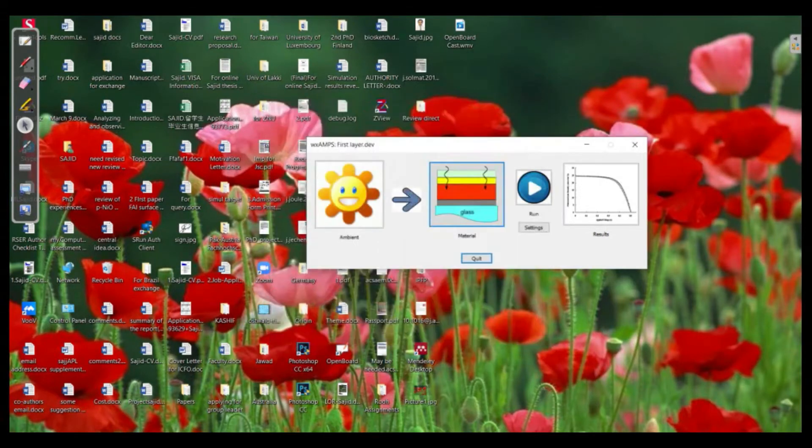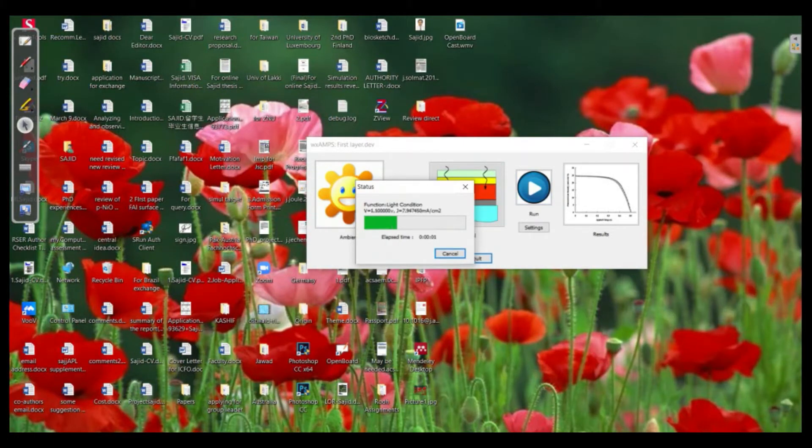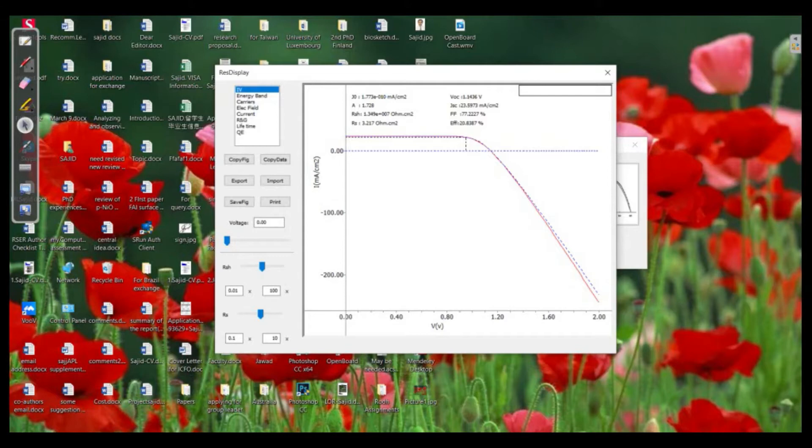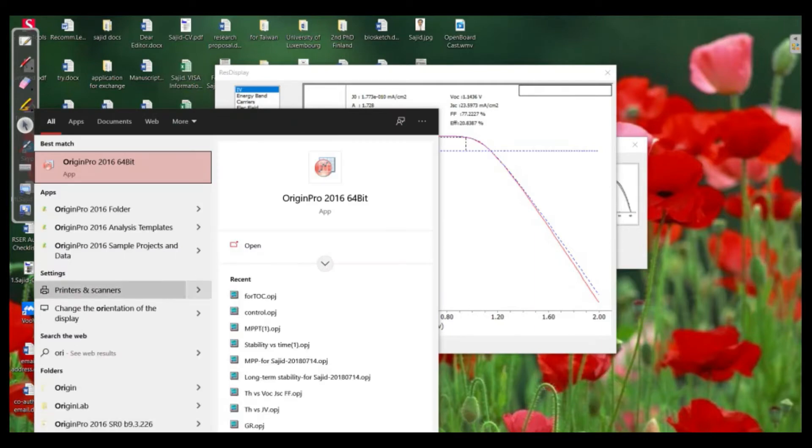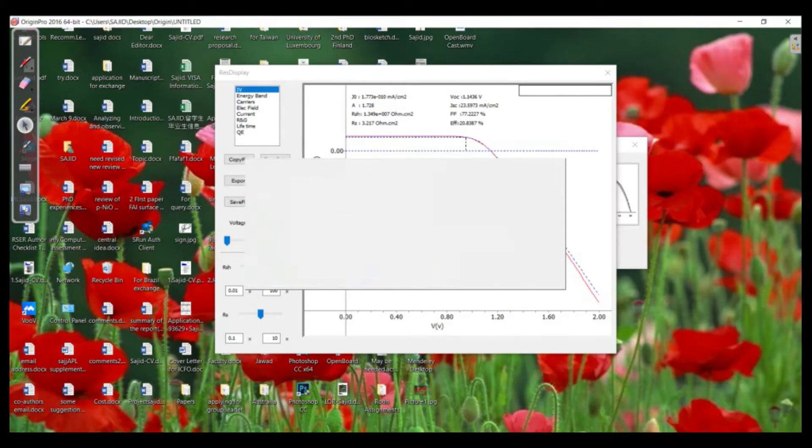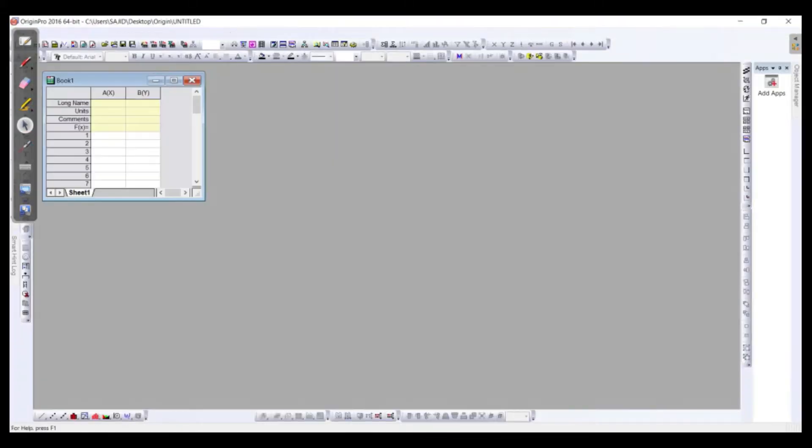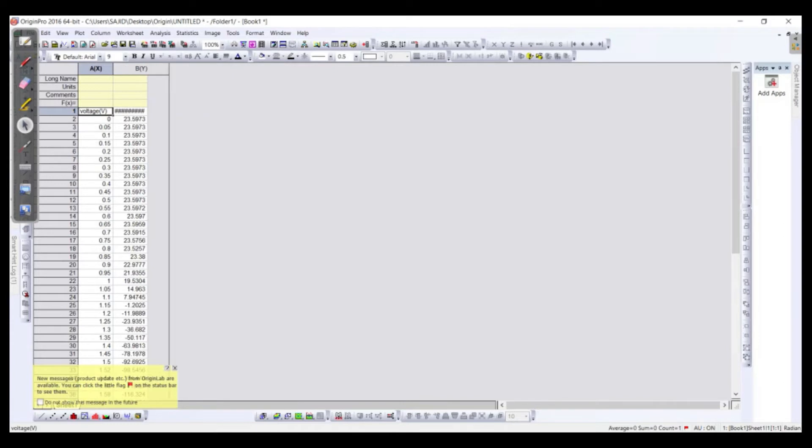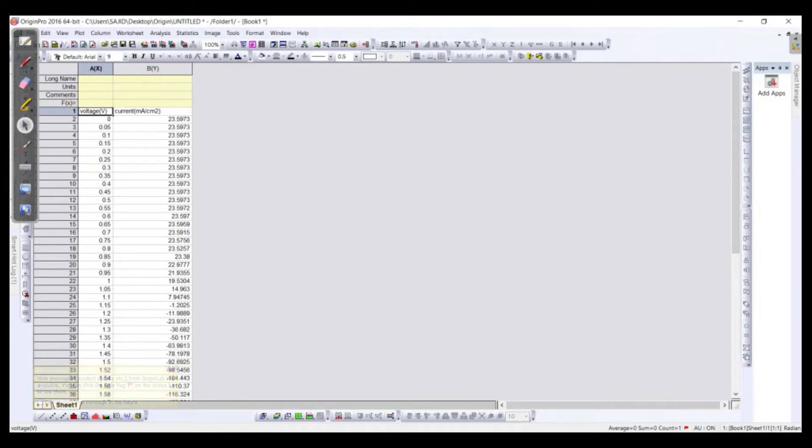Yes, and need to wait for a few minutes, then check it. This is the J-V curve of our device. Let's move it from here to the Origin Pro. So I need to click copy and then open the Origin Pro from your laptop or from your source, and here we need just to copy it.